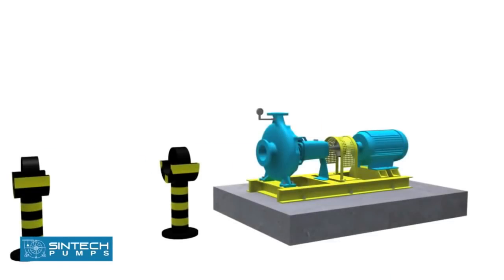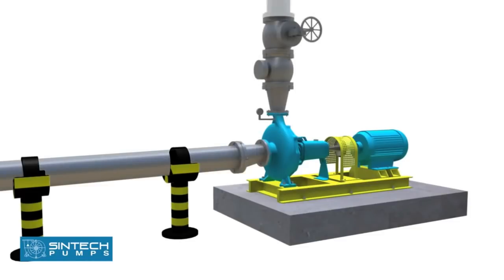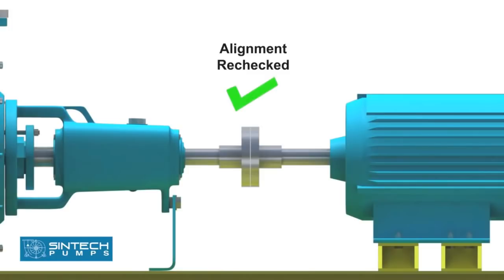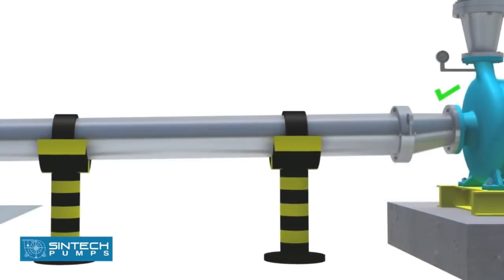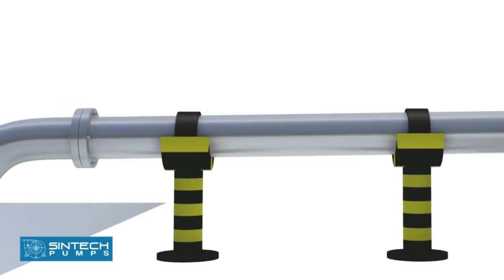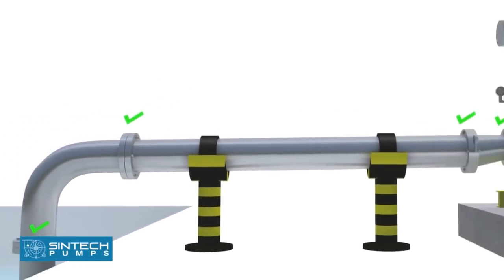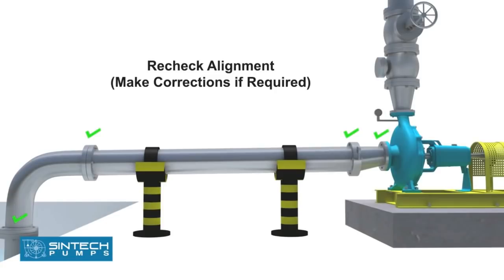After the alignment is completed, the piping associated with the pump should be bolted. Once this is completed, the alignment should be rechecked and similar readings should be obtained. If this is not the case, then the piping should be investigated and suitable corrections should be made. If this is left unattended, it can cause stress on the pump casing.